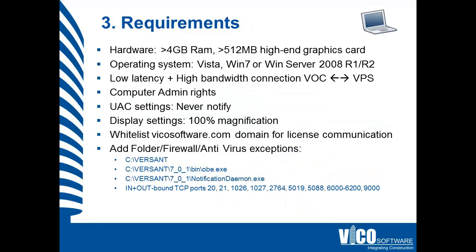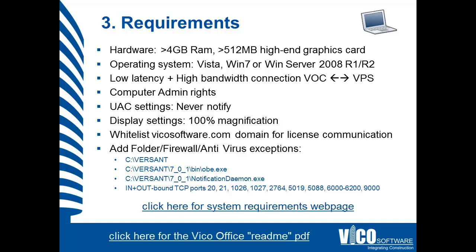Let's take a look at the requirements. One of the first things to check is your hardware — is it powerful enough for the models you intend to use? You can review the current system requirements page on the Vico software website. Preferably a Windows 7 64-bit machine with more than 4GB of RAM and a high-end graphics card, with the latest graphics driver installed. We'll also check Windows settings, and we ask that your IT department adds the VicoSoftware.com domain to your whitelist so that your licenses can be delivered safely. We'll also check your firewall and antivirus settings before running the installer and adding a license.